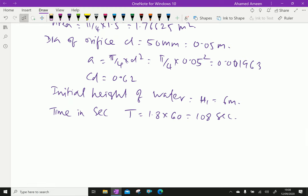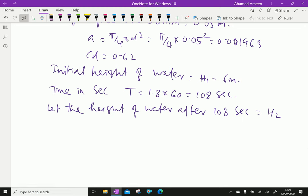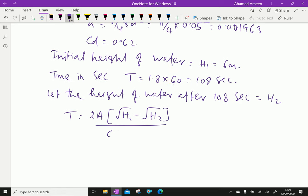Let the height of water after 108 seconds equal H2. Using formula T equals 2A times root of H1 minus root of H2 over Cd times a times root of 2G.